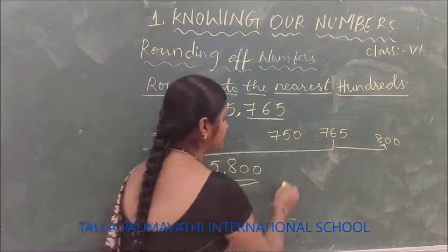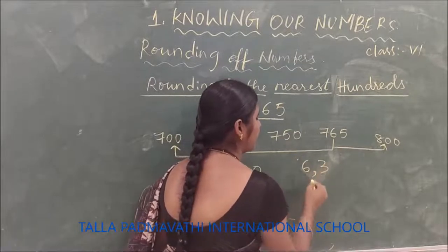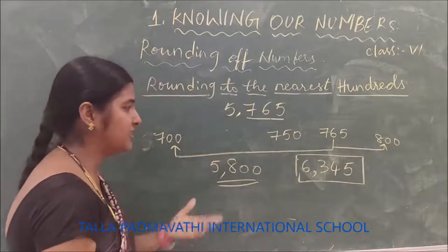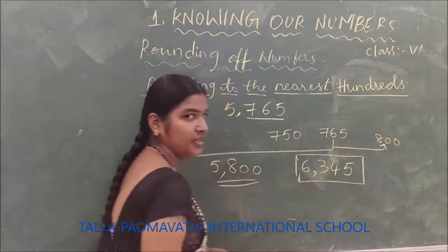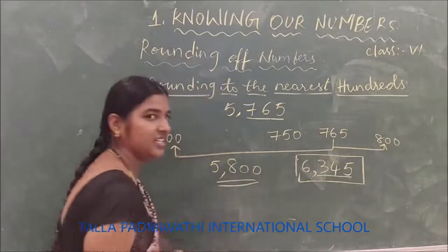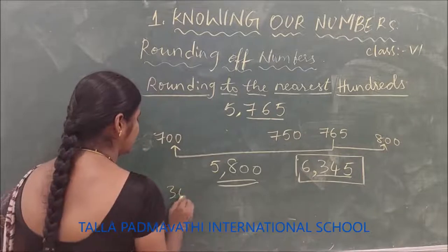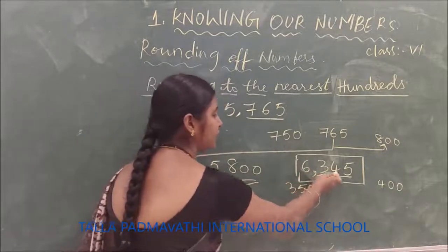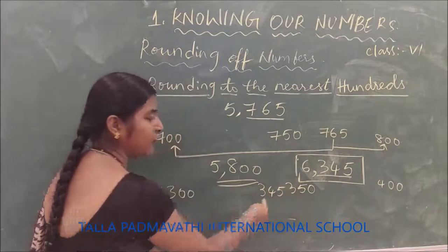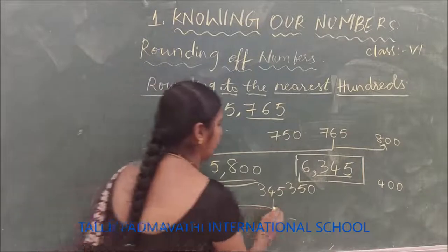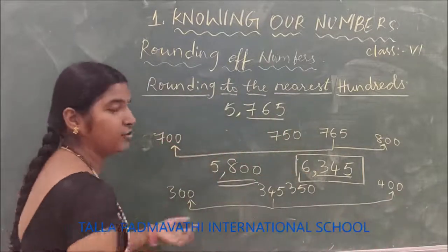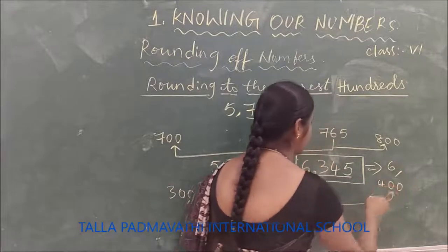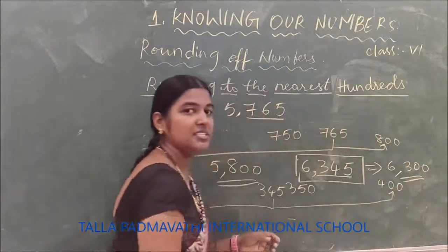Let us see one more number: 6,345. We need to round it off to the nearest 100. Take the last three digits, 345, which is between 300 and 400. In between that we have 350. Now 345 is before 350. Is it nearest to 300 or nearest to 400? You can observe easily that 345 is nearest to 300. So we are rounding off the number 6,345 to 6,300.